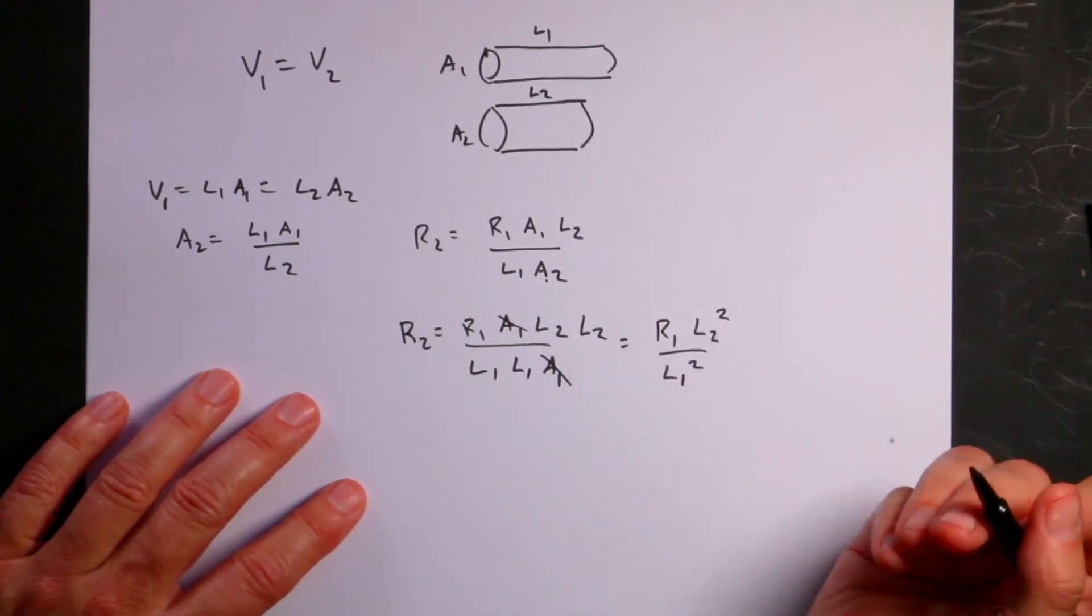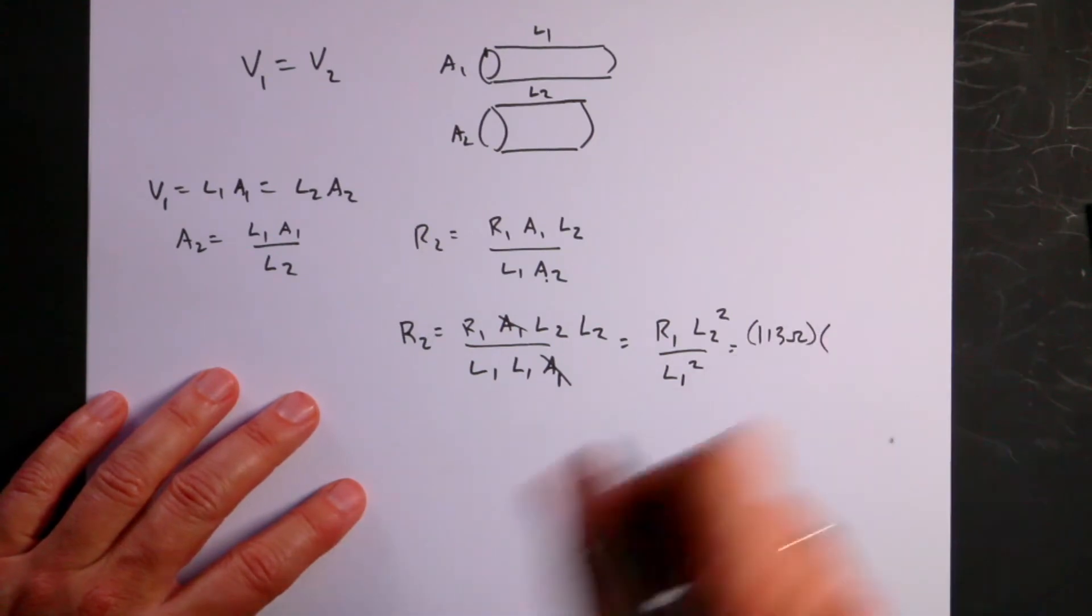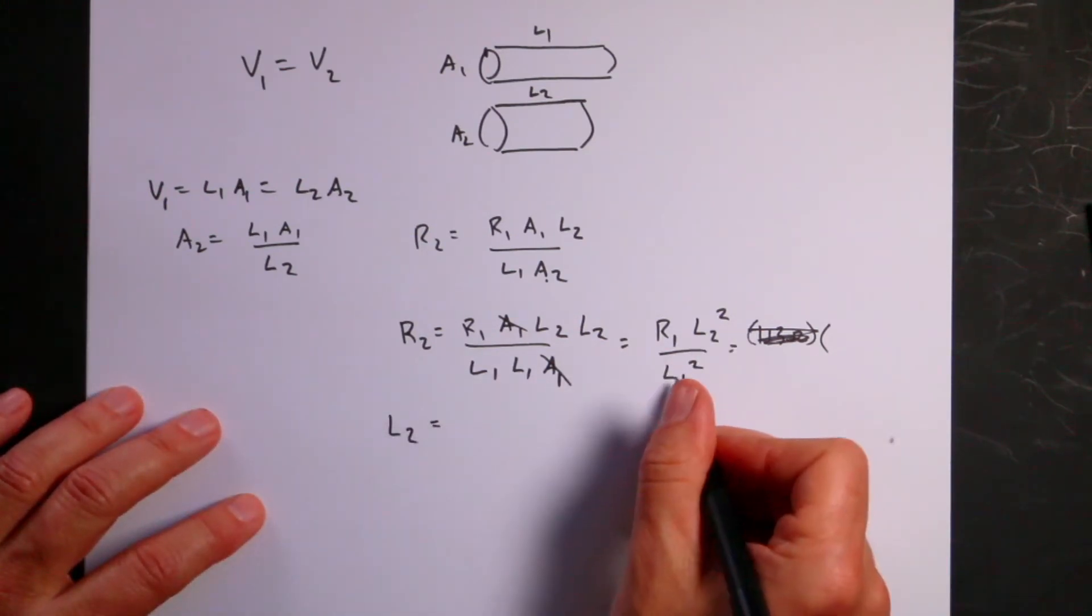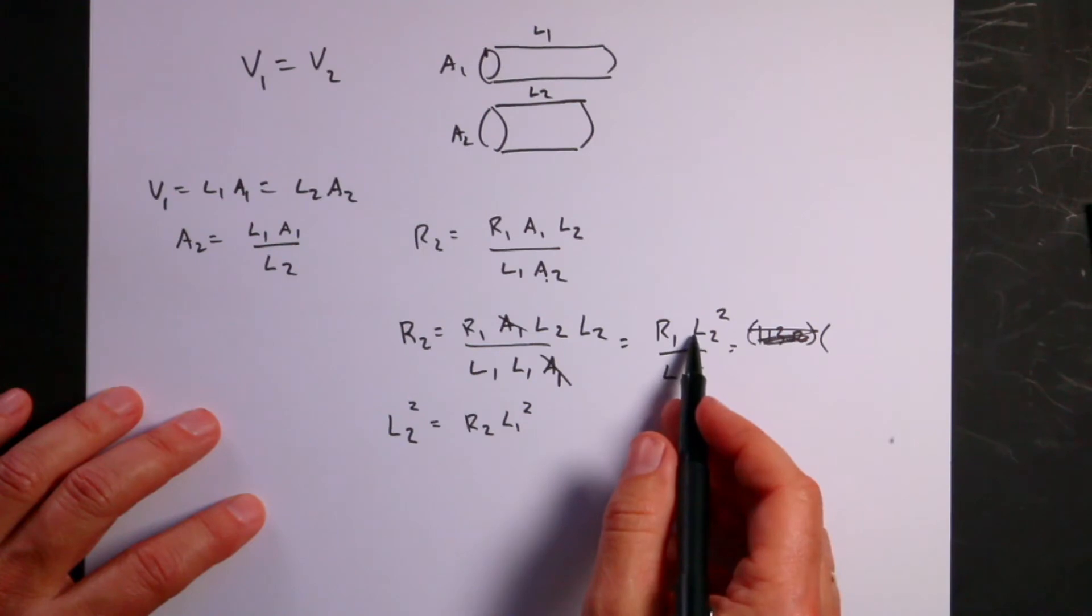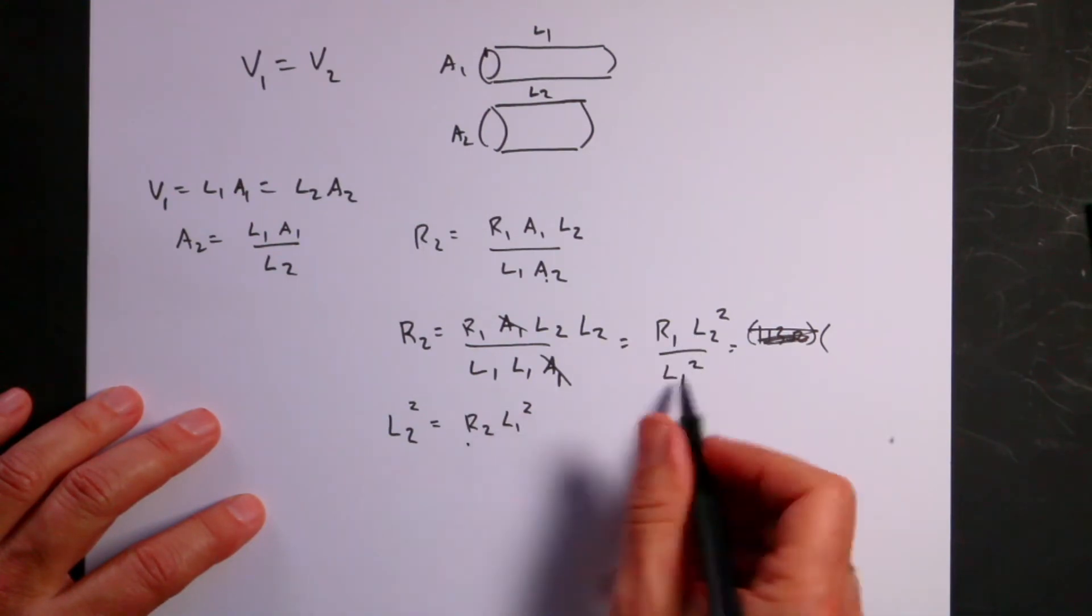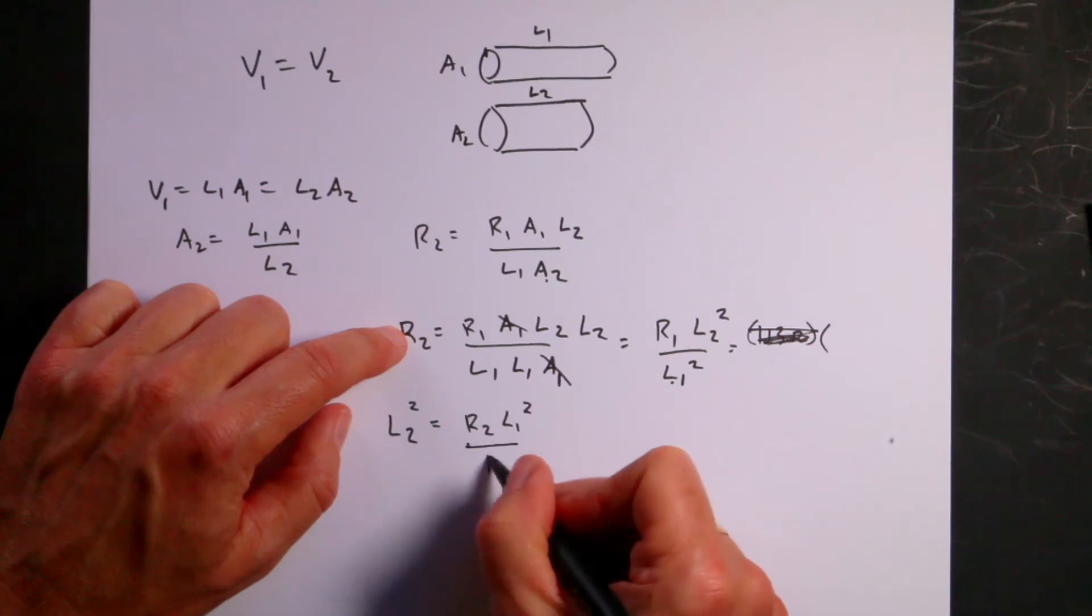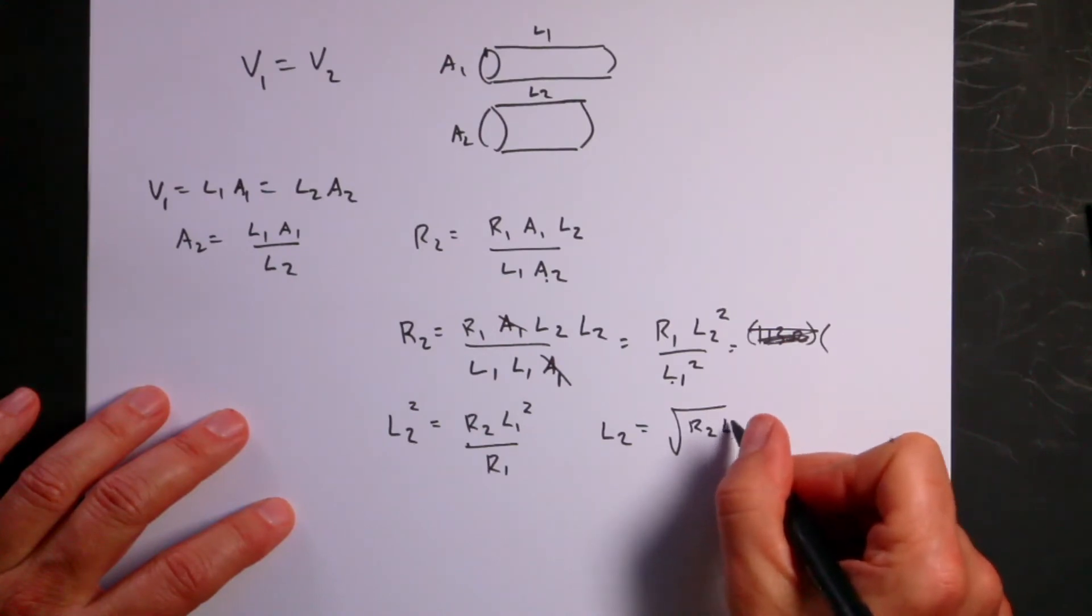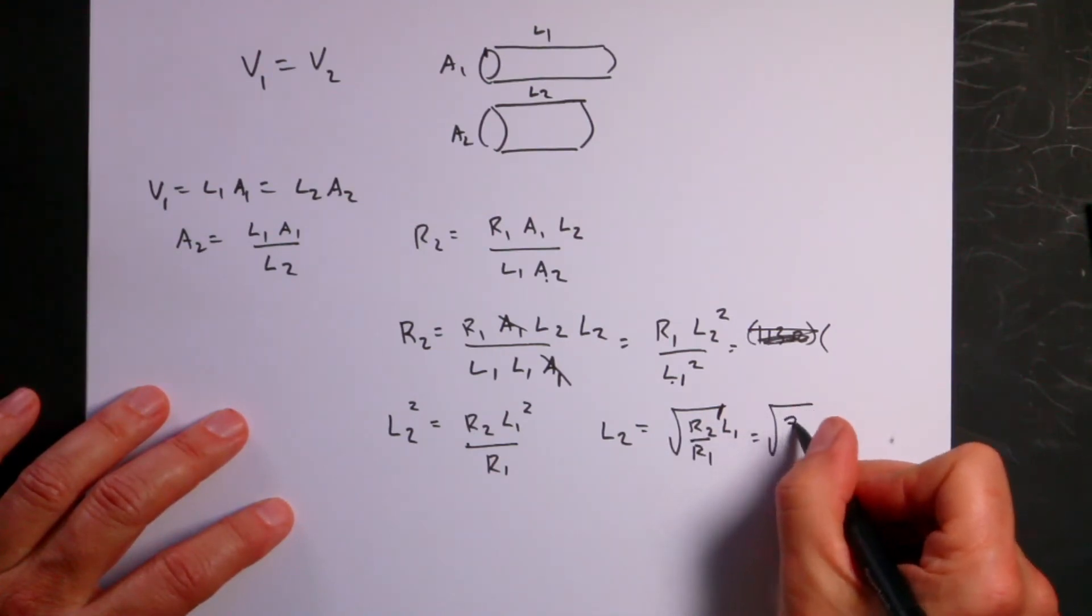So now I know everything. I want to solve for L2. So L2 squared is going to be R2 times L1 squared divided by R1. And then I take the square root. So L2 equals the square root of R2 L1 squared over R1. So this is going to be the square root of R2 which is 71 ohms divided by 113 ohms times 0.15 meters.